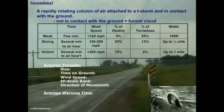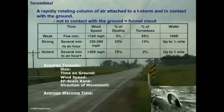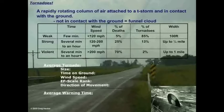In the violent category — EF4 and EF5 — sometimes you can have long-track, long-lived tornadoes that potentially last more than an hour, though that's extremely rare. Wind speeds for EF5s exceed 205 miles an hour. Only 2% of all tornadoes fall into this violent category, but they are responsible for 70% of the deaths. Some of these tornadoes can get up to a mile wide. The record was set in 2004 in Hallam, Nebraska — a tornado 2.5 miles wide. The fastest winds ever measured were 318 miles an hour in the Moore, Oklahoma 1999 tornado.